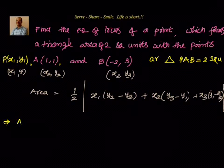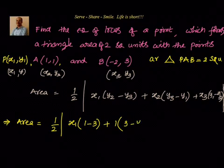Let's substitute. Therefore area equals half into x1(y2-y3). x1 is x1, y2 minus y3 is 1 minus 3, plus x2 which is 1 into y3 minus y1, that is 3 minus y1, plus x3 which is -2 into y1 minus y2, that is y1 minus 1. This whole thing equals 2 square units.